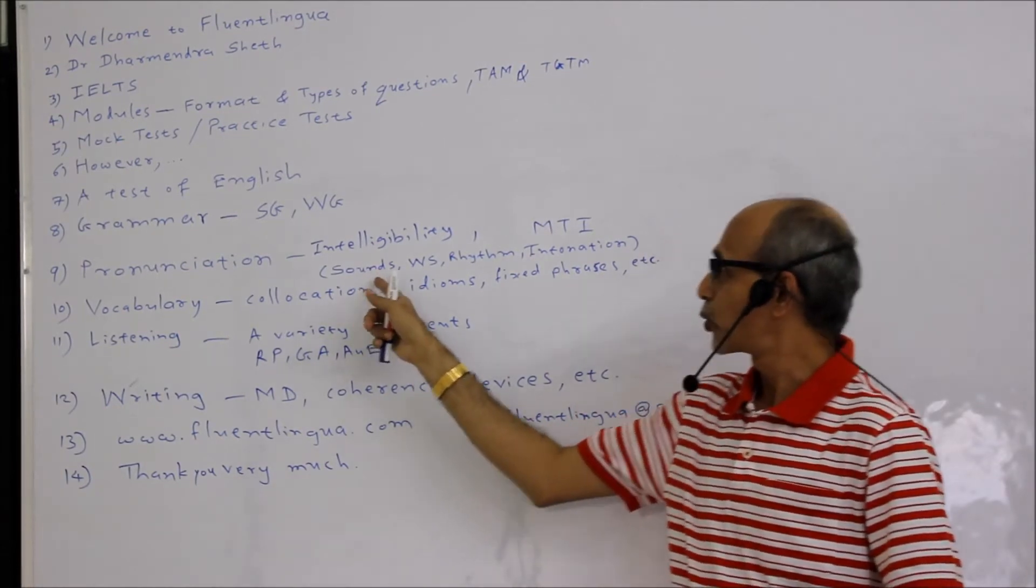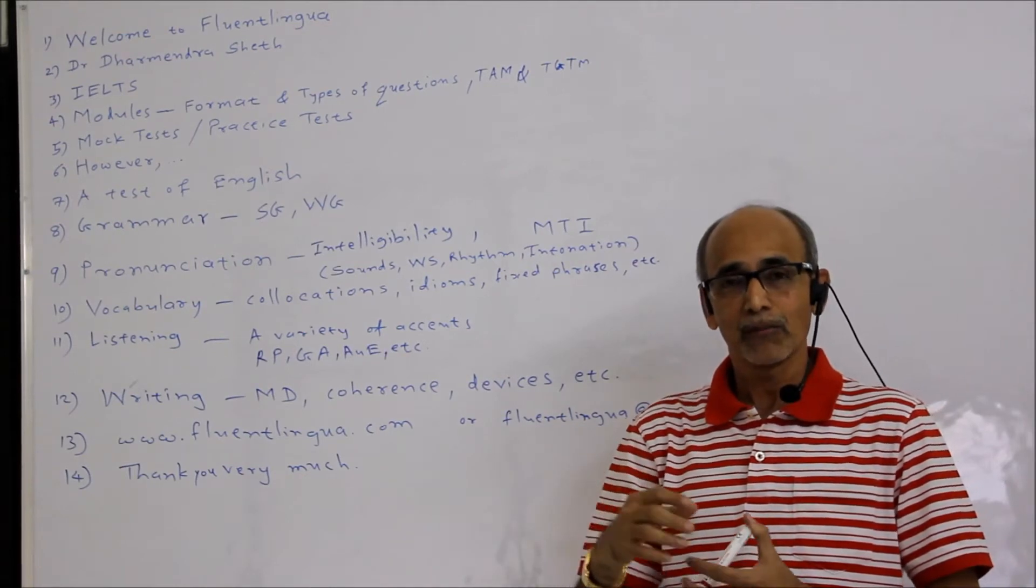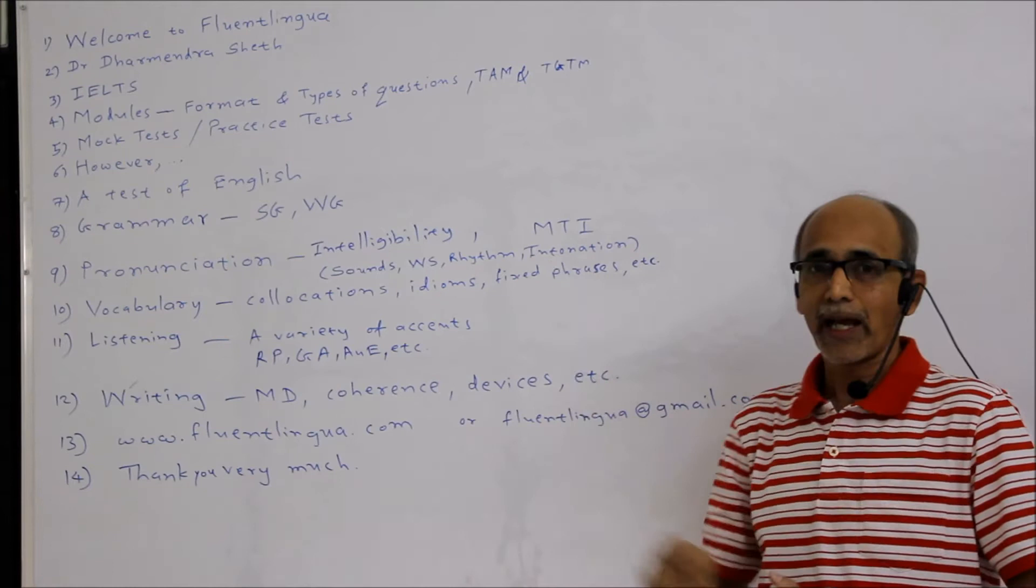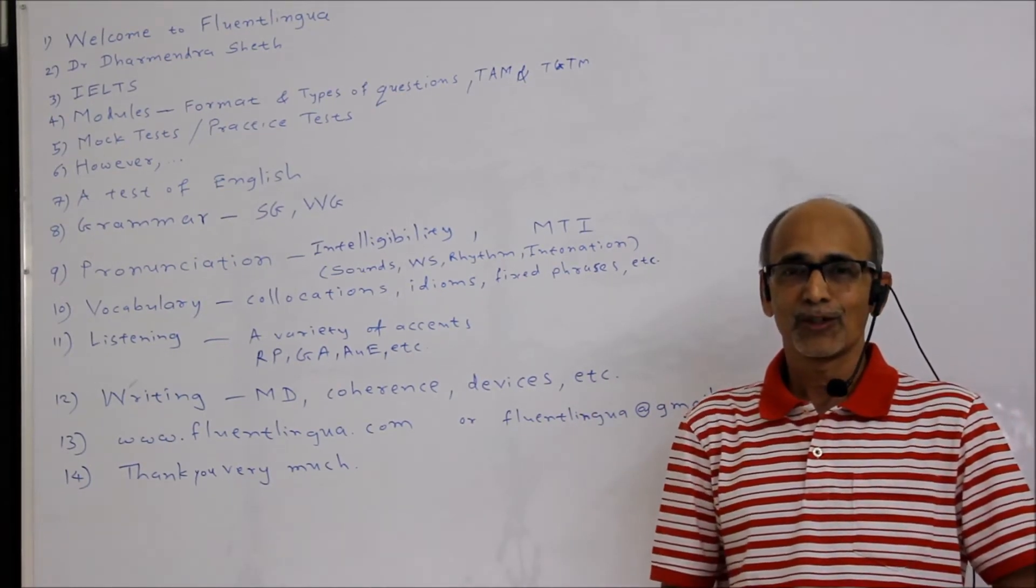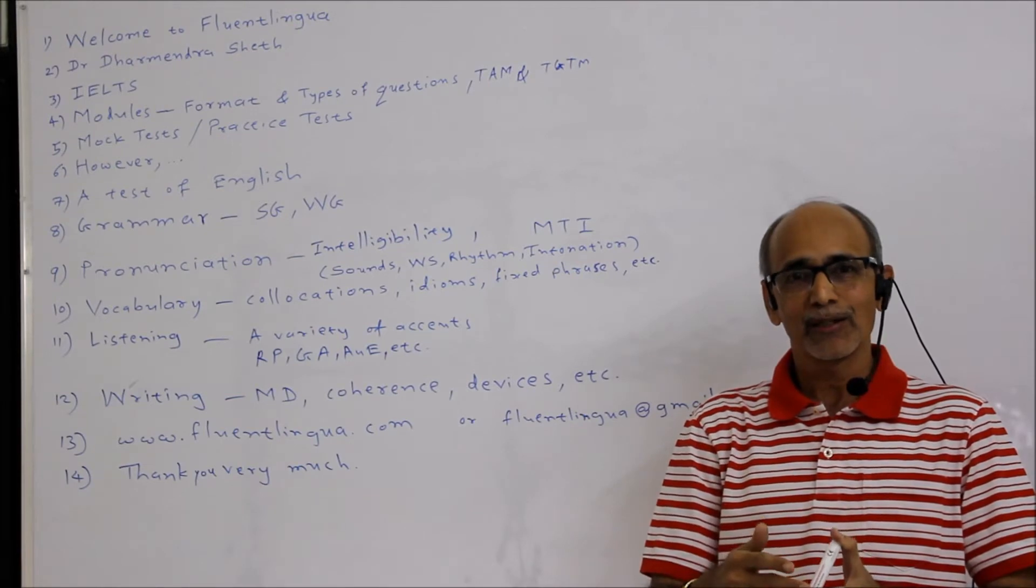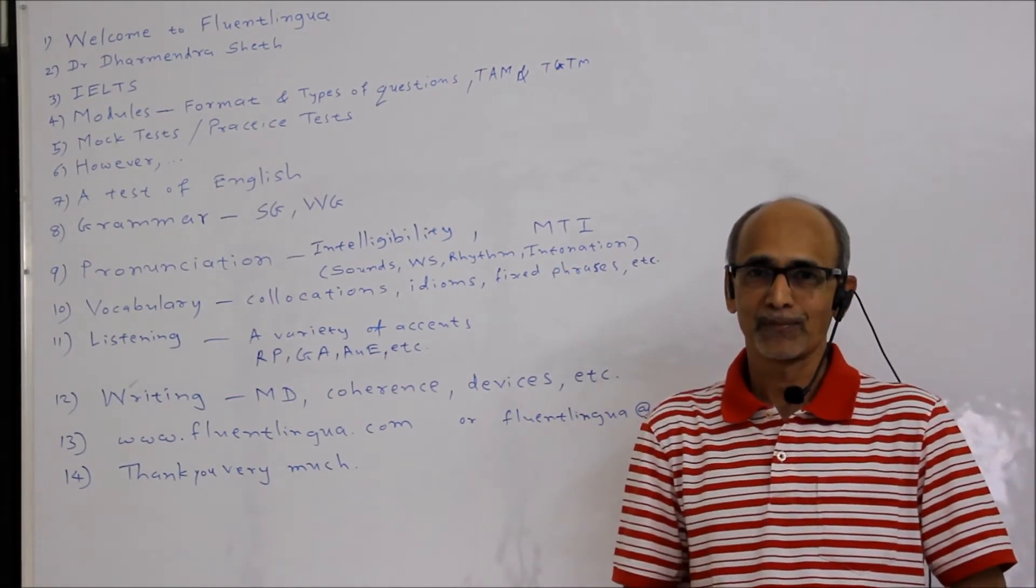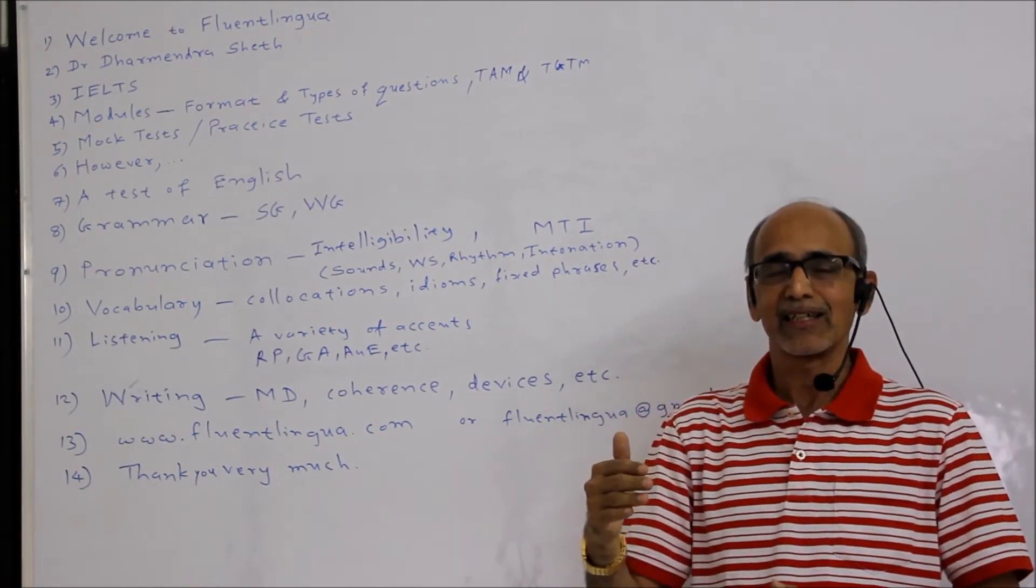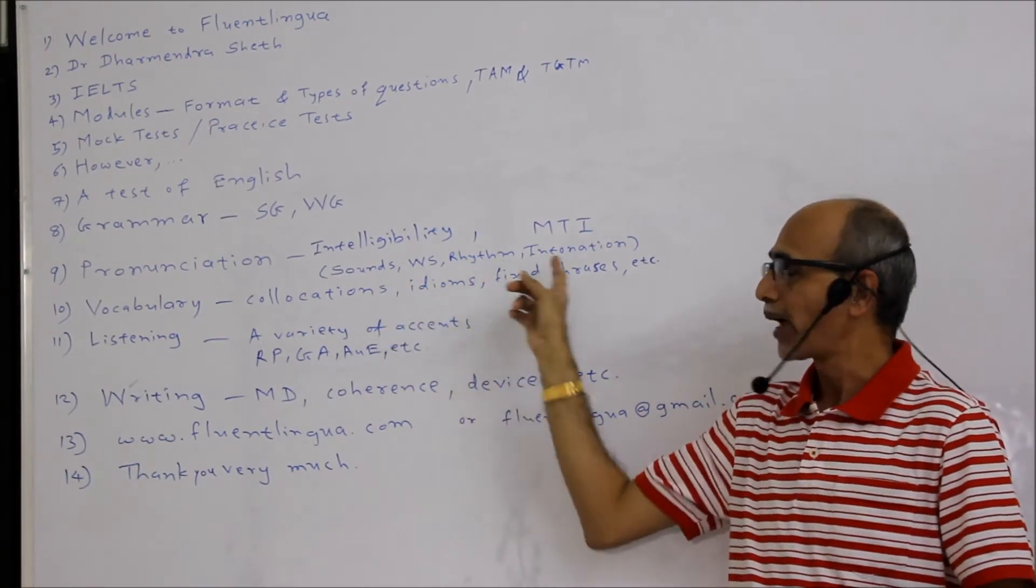For that, you need to work on four areas. And why? Because most people have what we call MTI, mother tongue influence. So when they speak English, their first language will influence their style of speaking. To remove or to decrease the influence of this MTI, we need to work on four areas.